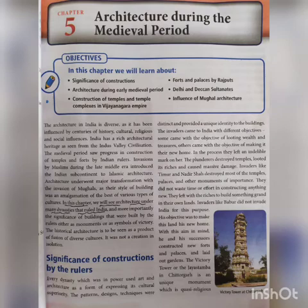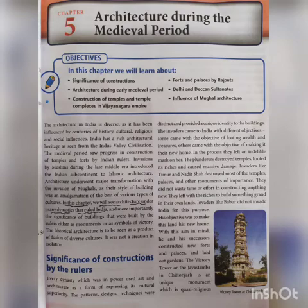The invading armies would destroy existing structures in conquered lands as they wanted to establish their superiority, and then construct new temples and monuments in their own style. The Mughal dynasty ruled for a long period during the medieval era, and hence their architectural style continued for some time before being replaced by the colonial style of architecture introduced by the British.